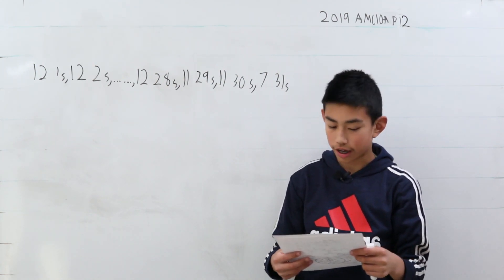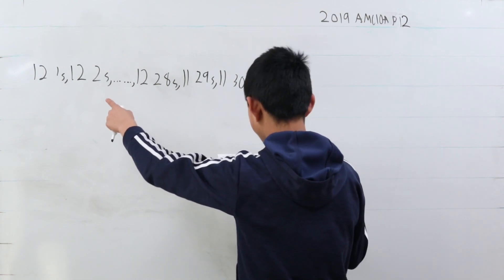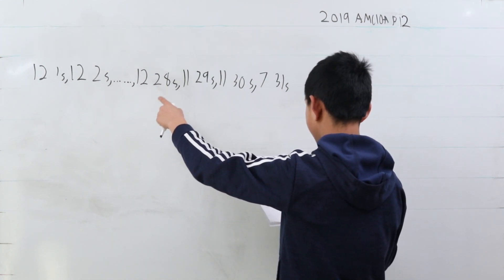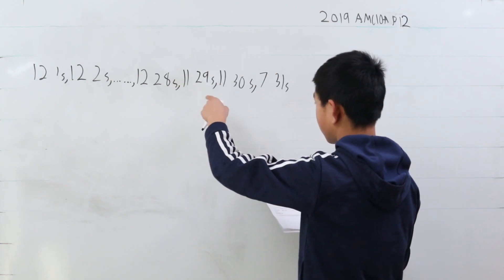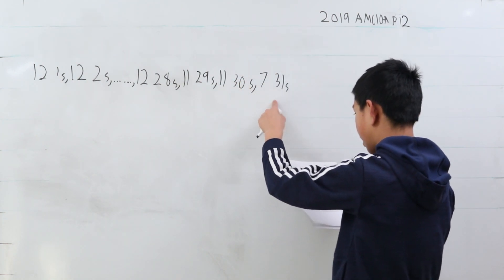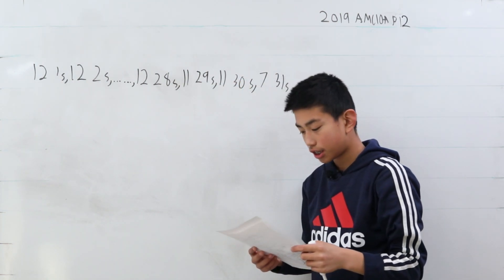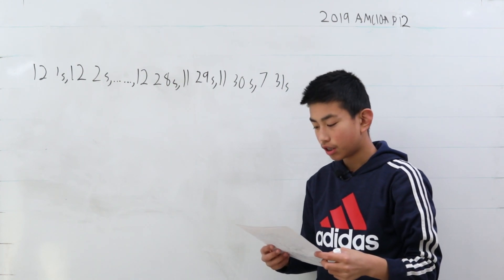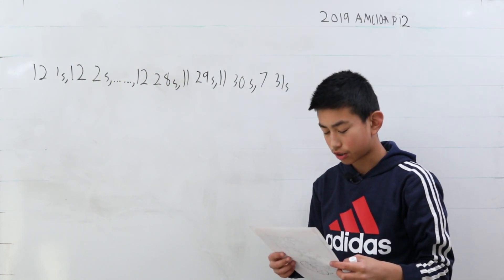Thus her data consists of 12 ones, 12 twos, dot dot dot, all the way to 12 twenty-eights, 11 twenty-nines, 11 thirties, and 7 thirty-ones. Let d be the median of the modes. Which of the following statements is true?